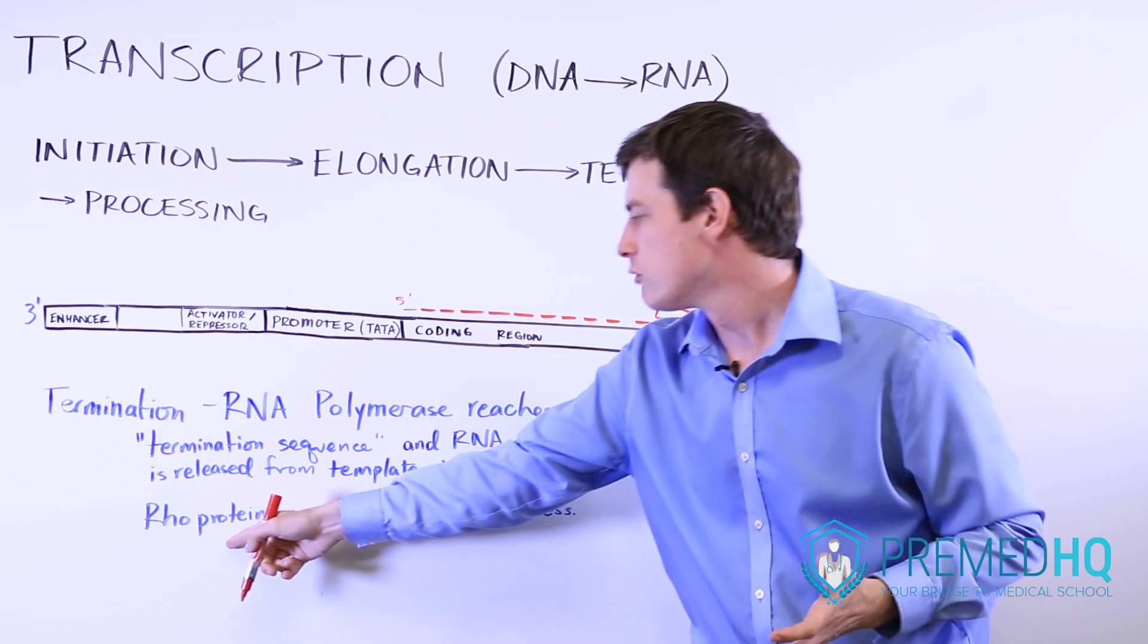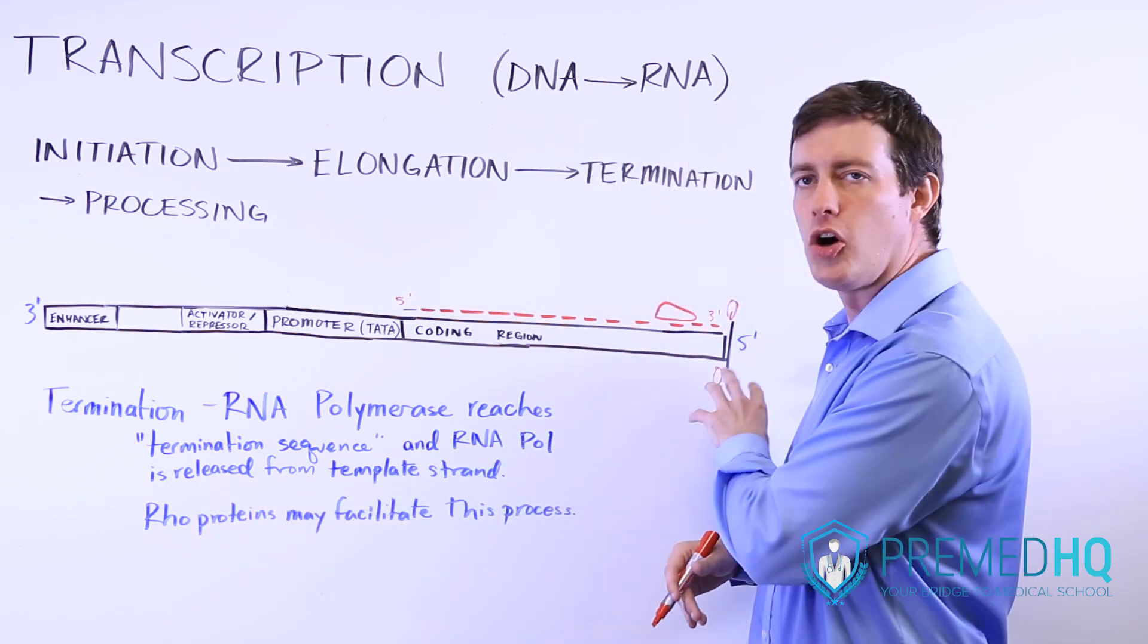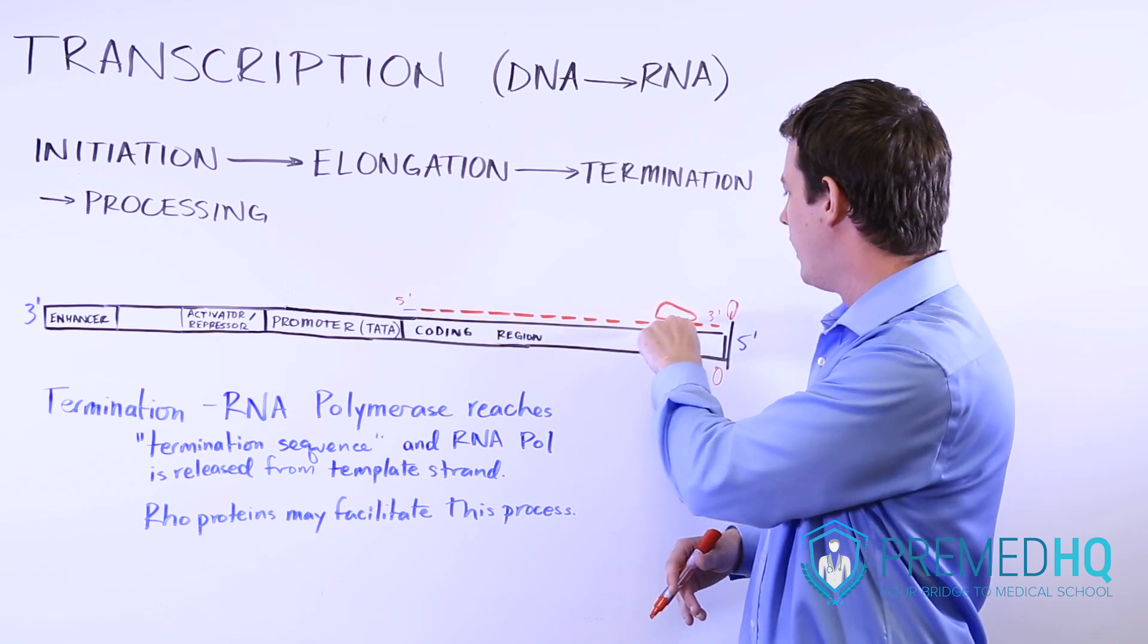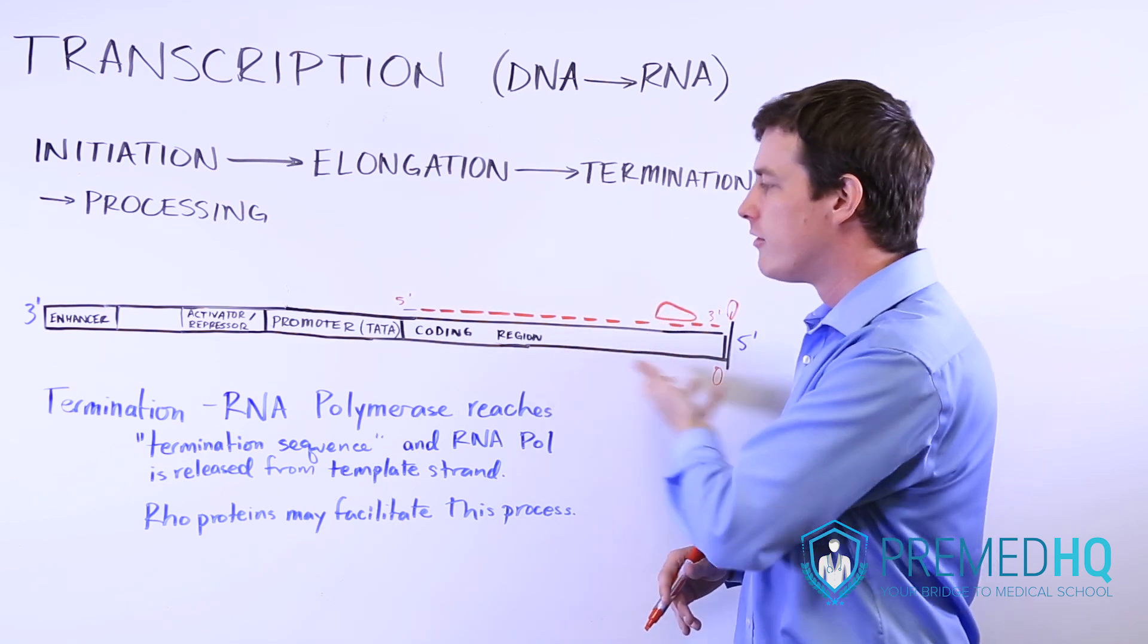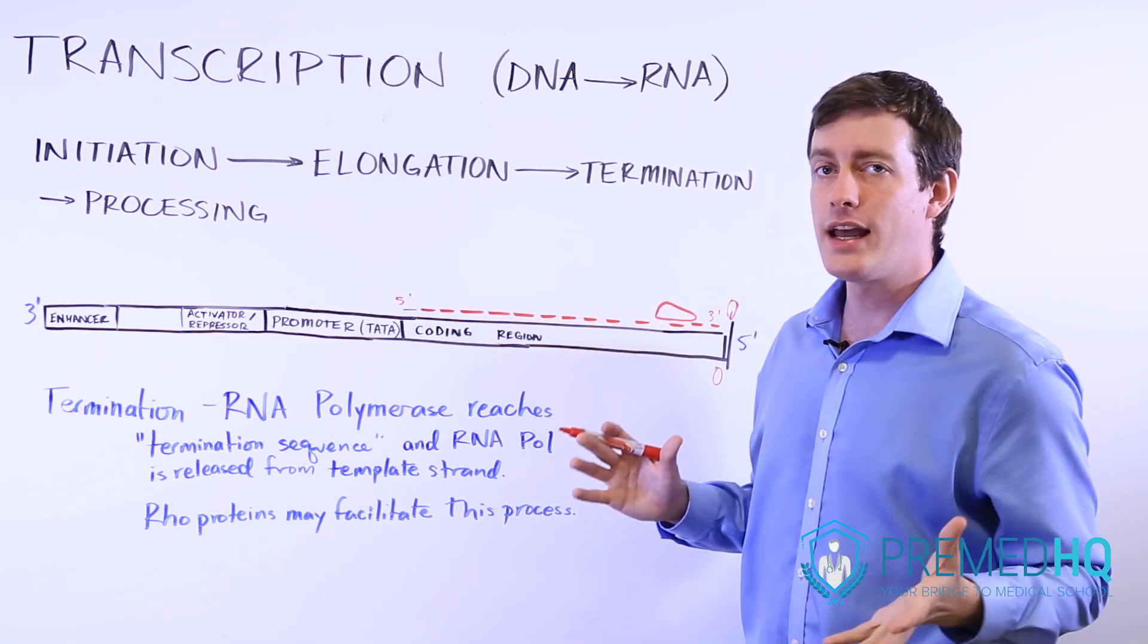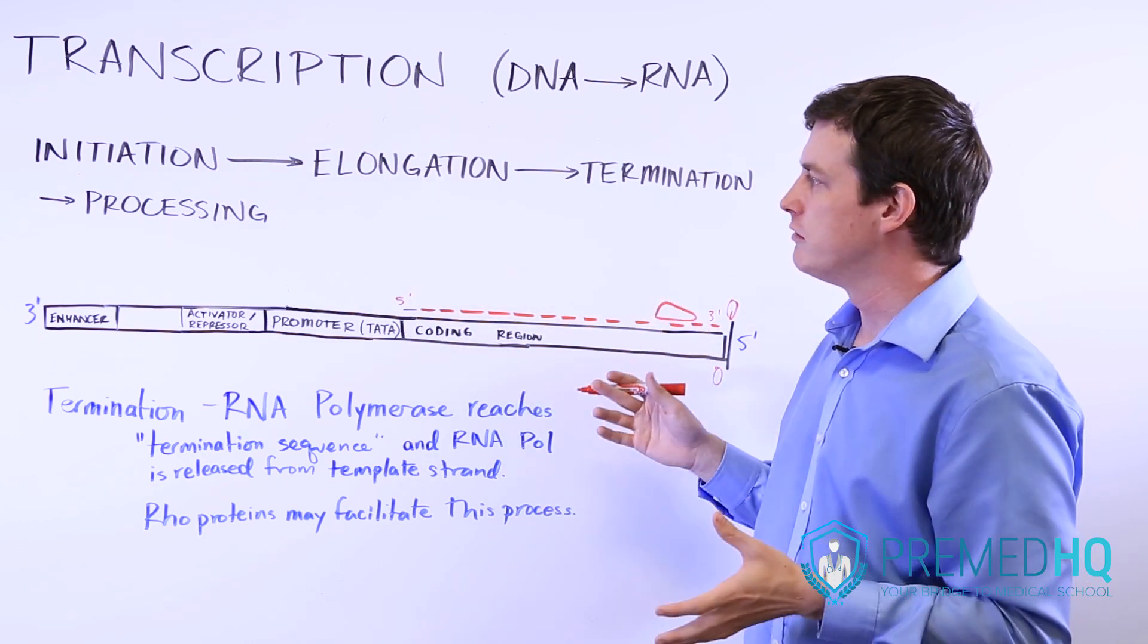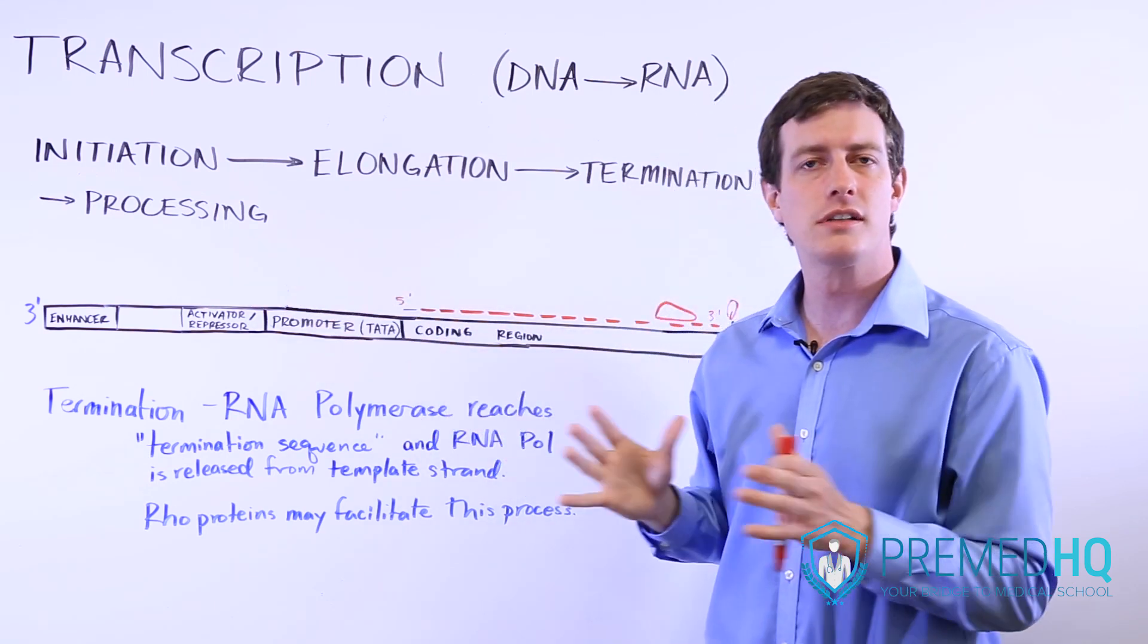The only other thing is that these rho proteins may be involved in this process and facilitate the unbinding of the RNA polymerase from the DNA. Once that happens, then the primary transcript will be ready for processing of introns and exons